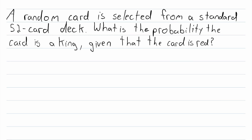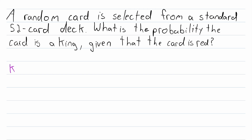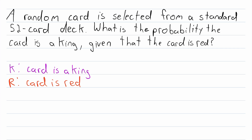Now let's look at another example — a probability theory classic involving card decks. A random card is selected from a standard 52-card deck. What's the probability that the card is a king given that the card is red? K is the event that the card is a king, R is the event that the card is red, and we want to find P(K|R).